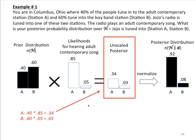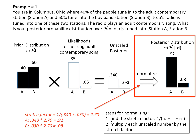Next, you do multiplication to get your unscaled posterior. You multiply the prior distribution in hypothesis 1 times the likelihood of seeing this data under hypothesis 1, and you get 0.34. You multiply the prior in hypothesis 2 times the likelihood of seeing that data under hypothesis 2, and you get 0.03. These are like probability weightings, but they're not an actual probability distribution because they don't sum to 1. That's why you've got to normalize.